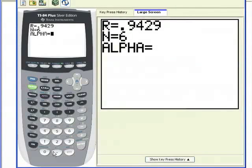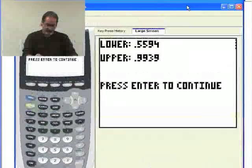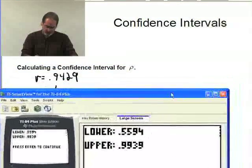Sample size of 6. Now it asks for alpha. Well, if I want 95% confidence interval, alpha must be .05. Hit enter and there it is. Lower is .5594 and the upper is .9939. That's a pretty big range.